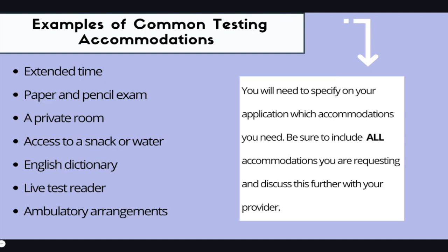People always ask what kind of accommodations they can get. This is very important: when you fill out your accommodations paperwork, you need to specify which accommodations you need. Make sure you are explicit and include all the accommodations you're requesting, because you don't want to have to go back and be re-approved. Discuss which accommodations are appropriate with your provider and cover all your bases. Extended time is usually the most common accommodation — I've heard of people getting one, two, even up to three hours of extra time.